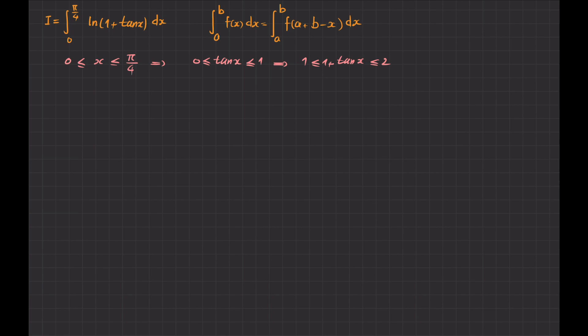So this means that I am on the safe side to use this theorem. I want to give the role of a to 0, I want to give the role of b to π/4, and I want to give the role of my function to ln(1 + tan x). So if this integral is I, using this theorem, I can also be written in this form.